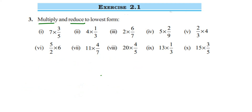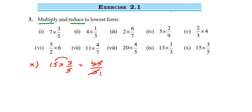The last question, the tenth one: 15 multiplied by 3/5. Multiply: 15 × 3 = 45, giving 45/5. Since 45 is divisible by 5: 45 ÷ 5 = 9. So the answer is 9.